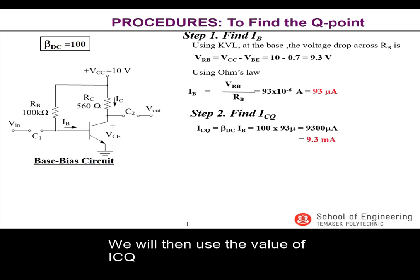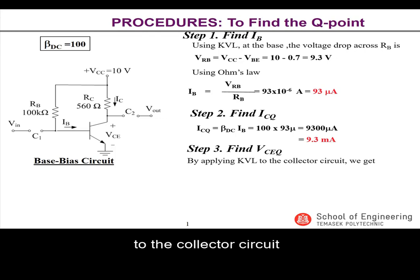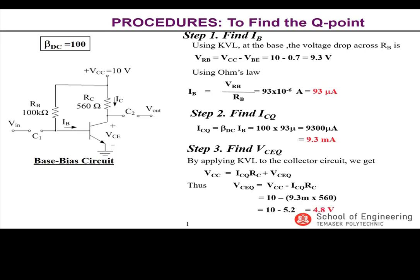We will then use the value of ICQ to calculate the value of VCEQ in step 3. We can do so by applying KVL to the collector circuit, that is the vertical KVL loop. This will give us the following KVL equation. Rearranging this equation, we can calculate for VCEQ to give an answer of 4.8 volts.